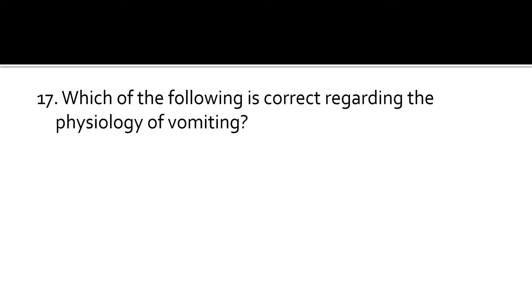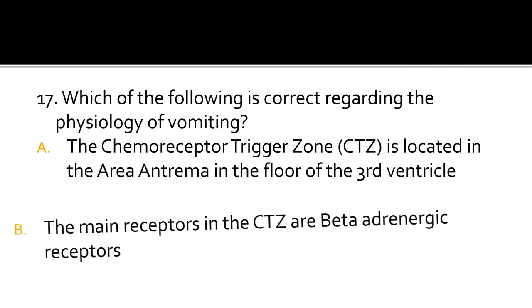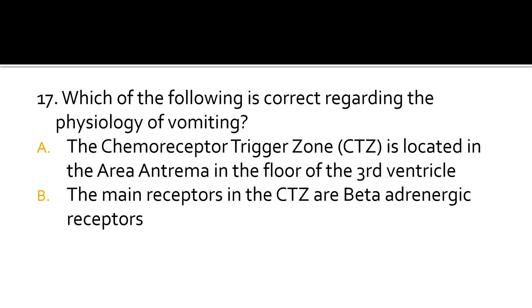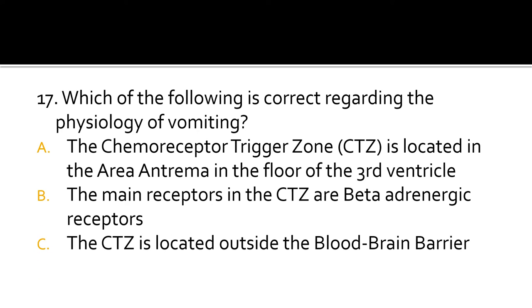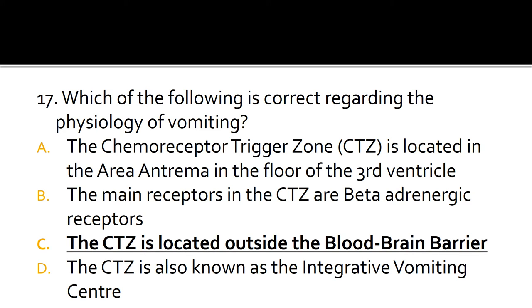Question 17. Which of the following is correct regarding the physiology of vomiting? The chemoreceptor trigger zone, or CTZ, is located in the area postrema in the floor of the third ventricle. The main receptors in the CTZ are beta adrenergic receptors. The CTZ is located outside the blood-brain barrier. The CTZ is also known as the Integrative Vomiting Centre. The correct answer is C: the CTZ is located outside the blood-brain barrier.